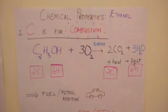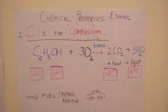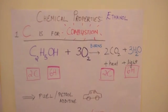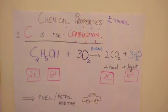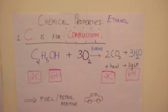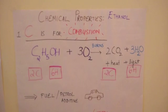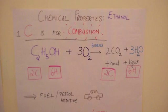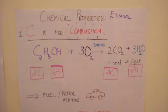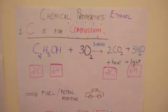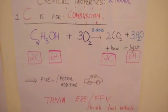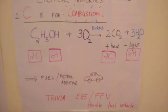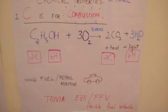So C2H5OH takes in oxygen from the air. When it burns, on the right-hand side you get carbon dioxide, three molecules of water, and a release of heat and light. To check your equation, ensure two carbons on the left match two on the right, and six hydrogen atoms on the left match six on the right. Because ethanol burns so well, it is used as a petrol additive, in spirit lamps, and in E85 fuel — which is 85% ethanol and 15% gasoline — used in flexible fuel vehicles.